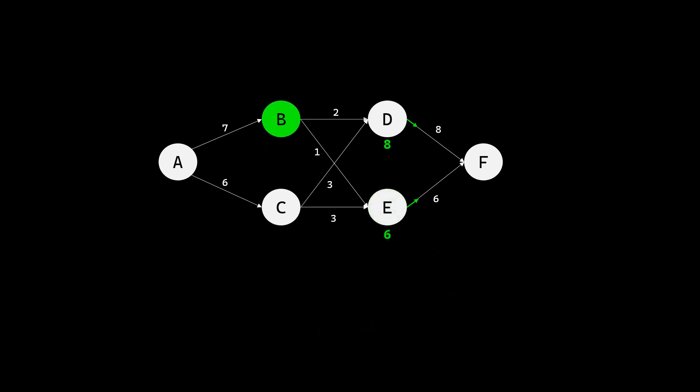Moving on to the prior stage, we focus on state B. Now, there are two ways to go from state B — one towards D, another towards E. The minimum cost of going towards D is 2 plus 8, which is 10. The minimum cost of going towards E is 1 plus 6, which is 7. So, the optimum way forward from state B is towards E, and the least cost from B to the destination state F is 7. The optimum direction is again marked with the green arrow.